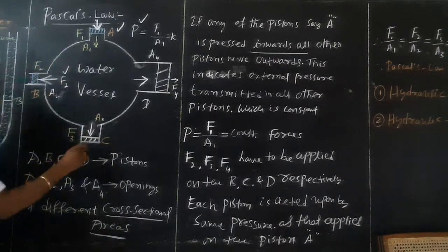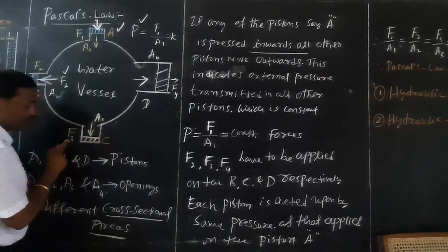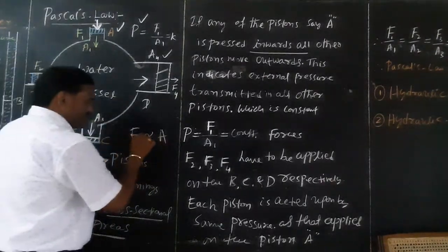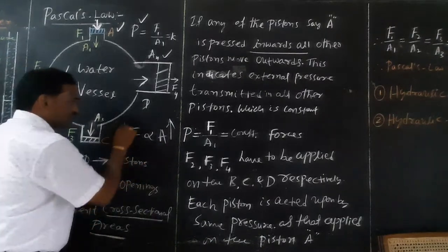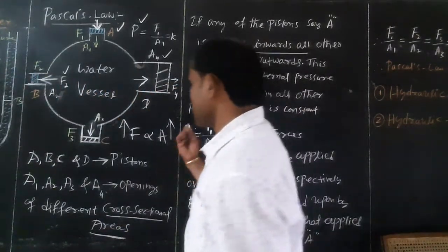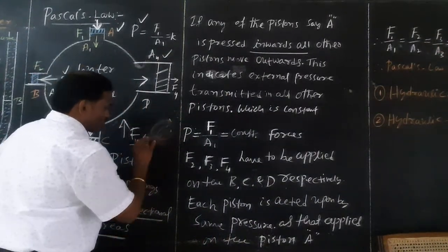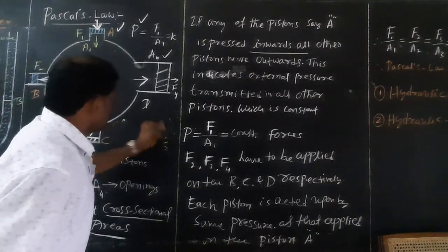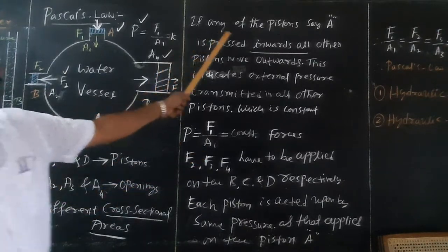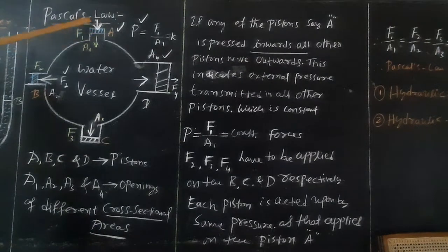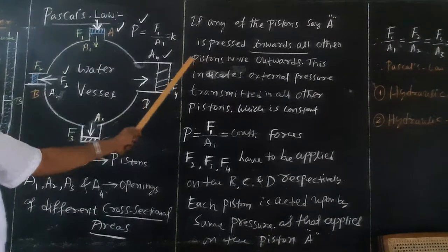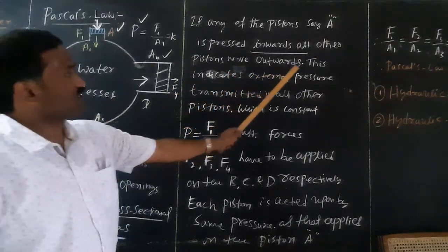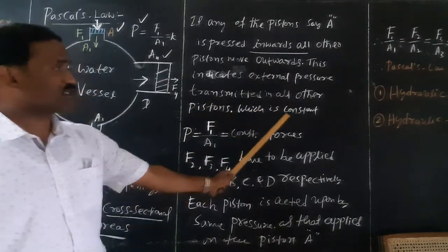As area increases, force increases proportionally. A1 with F1, A2 with F2, A3 with F3, A4 with F4 — force is proportional to area. If piston A is pressed inward with external force F1, all pistons B, C, D move outward. This indicates the external pressure is transmitted to all other pistons and remains constant: F1/A1 = F2/A2 = F3/A3 = F4/A4 = constant. Therefore Pascal's law is proved.